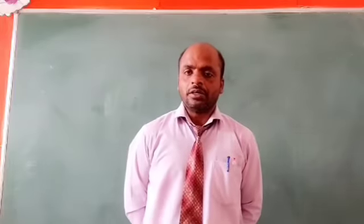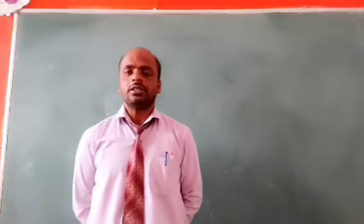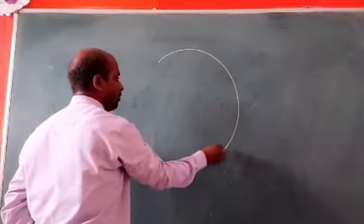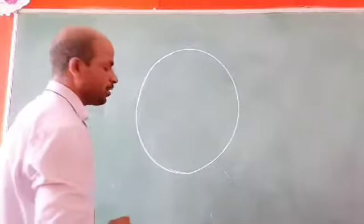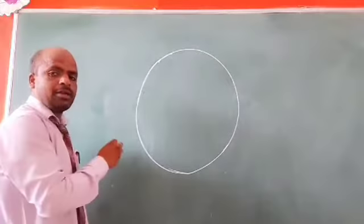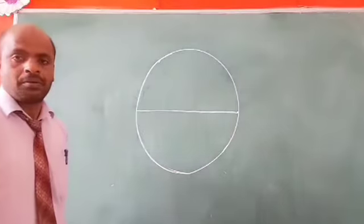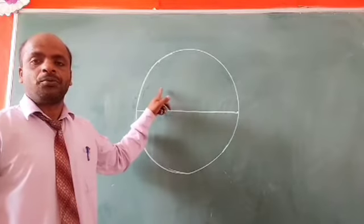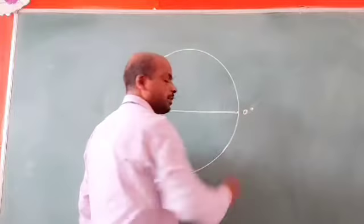Today I will repeat what the equator is. This is the model of the globe. An imaginary line which divides the globe into two equal halves is called the equator. It is located at zero degrees.